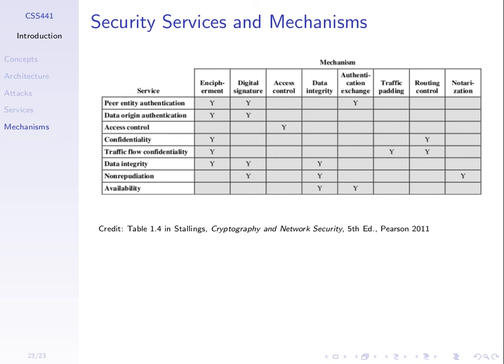This table lists the connection between security mechanisms in the columns and security services in the rows. The services are slightly different from the six we listed, splitting some into two. The key mechanisms we'll cover are encryption, digital signatures, and authentication exchanges.